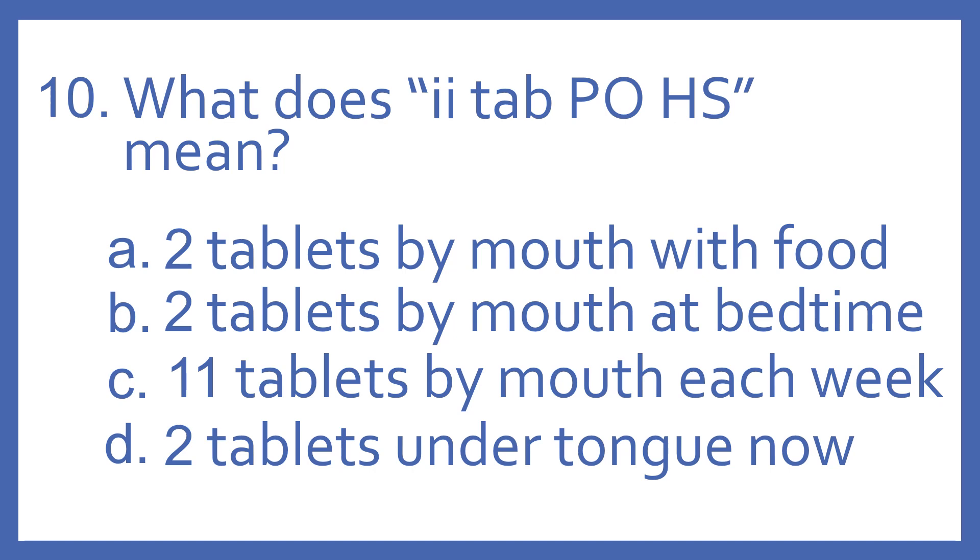Number 10, what does IITABPOHS mean? A, two tablets by mouth with food. B, two tablets by mouth at bedtime. C, 11 tablets by mouth each week. Or D, two tablets under the tongue now. And the answer is B, two tablets by mouth at bedtime. The II, that's the Roman numeral for two. Tab is the abbreviation for tablets. PO means by mouth. And HS means at bedtime.